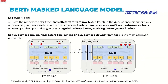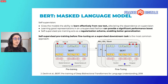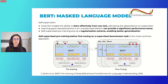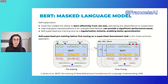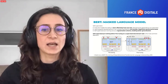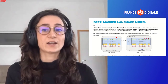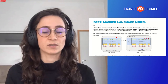Self-supervision gives the model the ability to learn effectively from raw text, alleviating the dependence on supervision. Even in cases where considerable supervision is available, learning good representations in a non-supervised fashion can provide a significant performance boost. Some research demonstrates that self-supervised pre-training acts as a regularization scheme, enabling better generalization. Therefore, pre-training a model on the language model objective before fine-tuning it for a supervised downstream task has been the most common approach in recent years. The main advantage is strong performance on many benchmarks — recall the 11 SOTA results on NLP tasks. One downside is that a large number of labeled examples are still typically required for each downstream task.